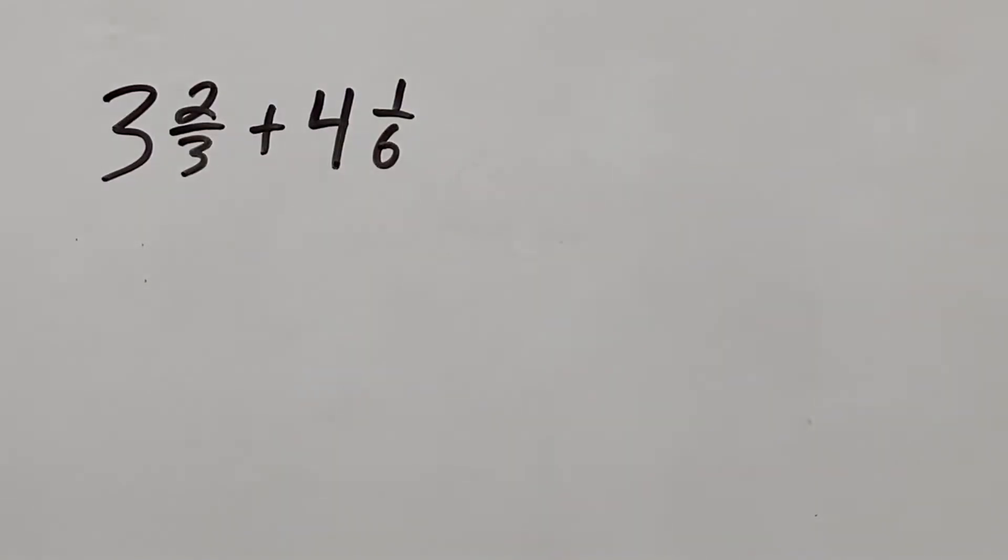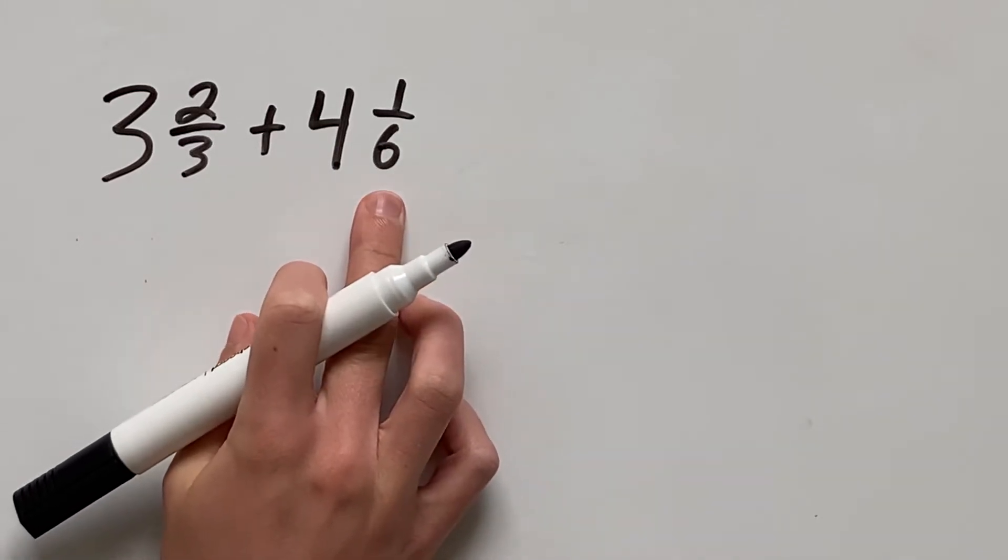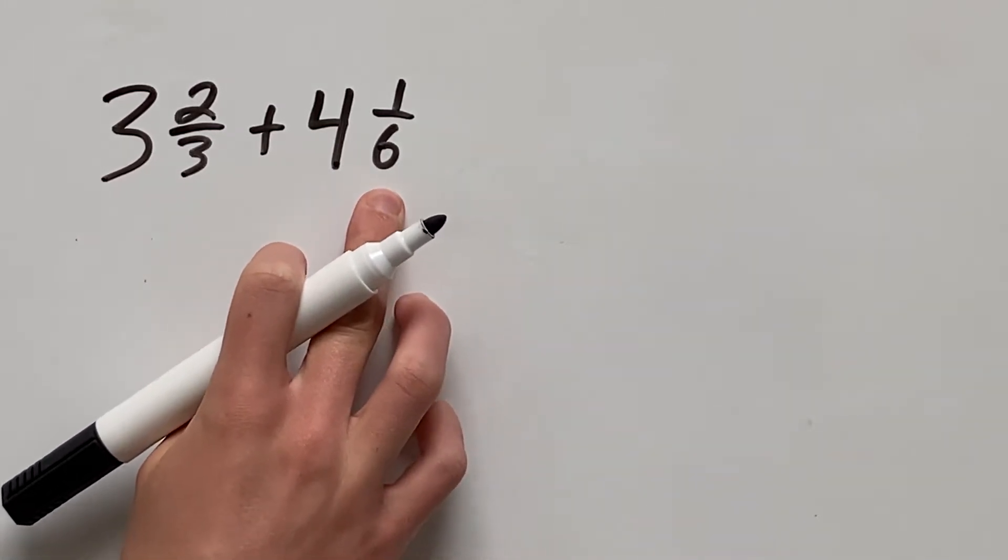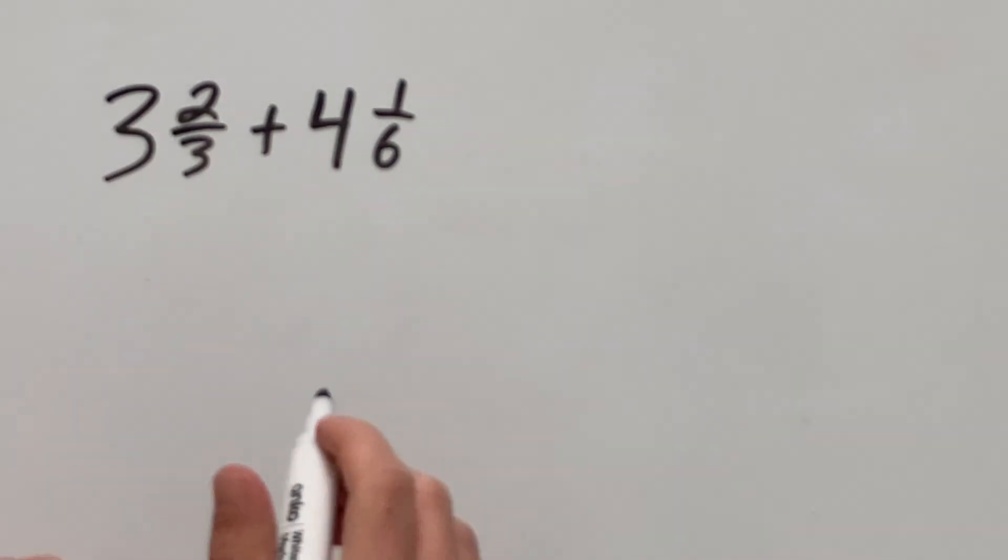So as you can see, here we have two mixed numbers and they have different denominators as one is three and another is six. So let's see how we solve this problem. We have 3 and 2/3 plus 4 and 1/6.